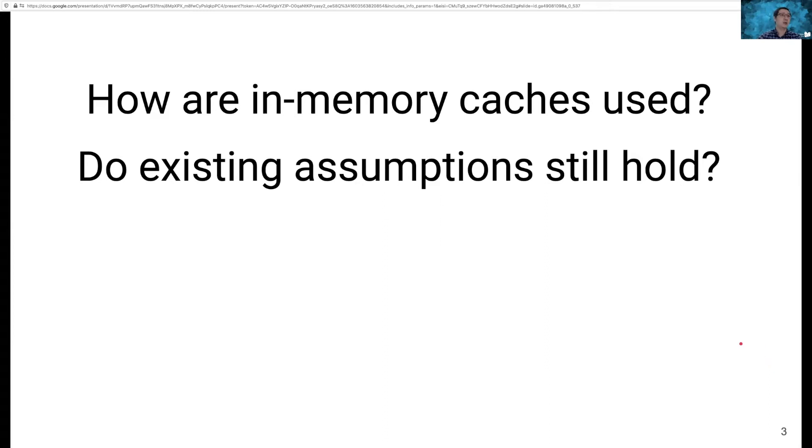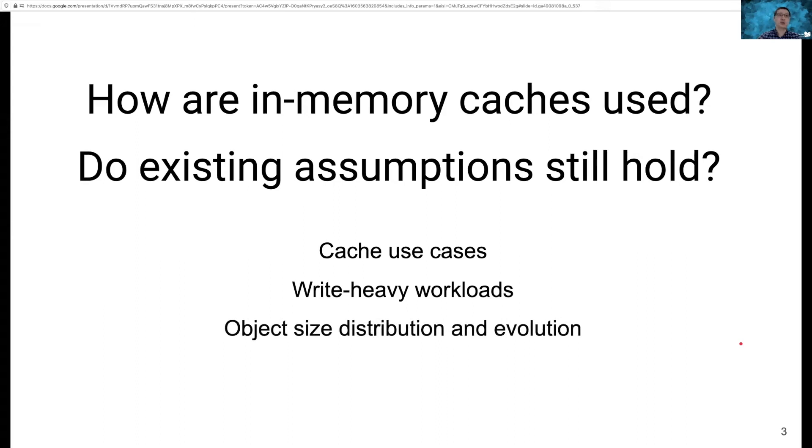In today's talk, I'm going to focus on four aspects. First, I'm going to talk about the three typical cache use cases. Second, I'm going to show write-heavy workloads. Third, I'm going to talk about object size distribution and its evolution. And last, I'm going to talk about Time to Live, which is short for TTL, and how it affects working set size and the design of eviction algorithms.